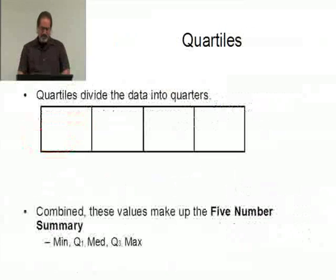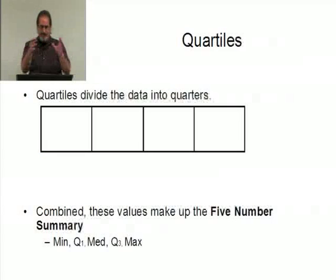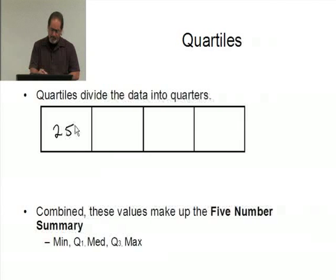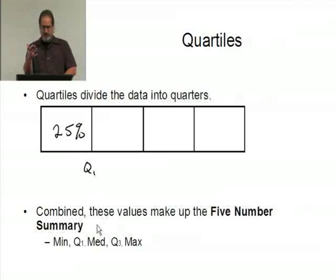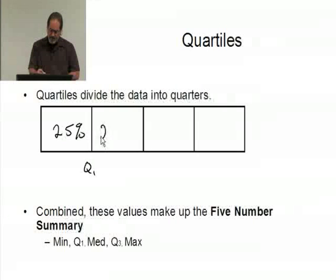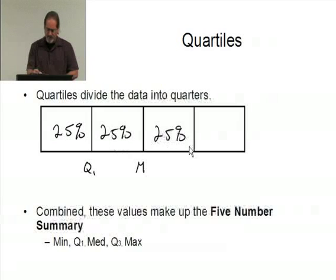What this is effectively doing is breaking data up into quarters. Twenty-five percent of the data would be here, which means this is Q1, if I'm talking about sample data. Twenty-five percent here, collectively that's fifty percent, well that's the median. Twenty-five percent here, collectively this is seventy-five percent, that's Q3, and the last twenty-five percent here.